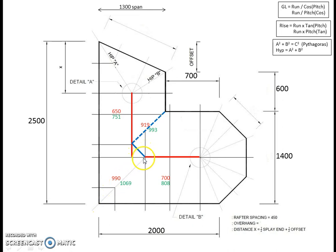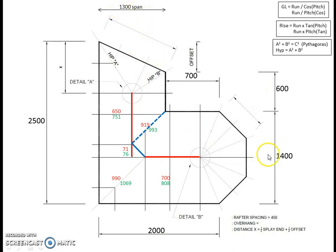That means run of the full hip minus run of the valley equals run of the broken hip. And it works with the GL as well: GL of the major hip minus GL of the valley equals GL of the broken hip. That gives us a run of 71 and a GL of 76. This is quite a small broken hip because the span of 1300 is not very far from the span of 1400 — there's only a 100mm difference between the spans, which is why the broken hip has ended up such a small measurement.